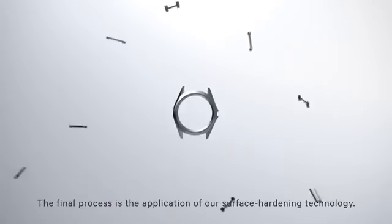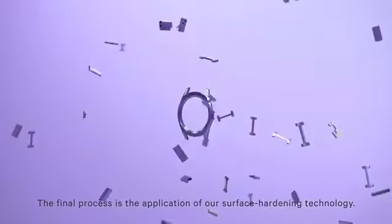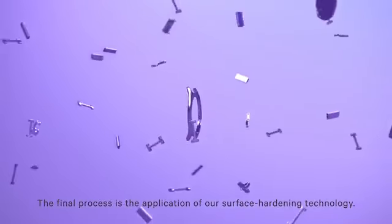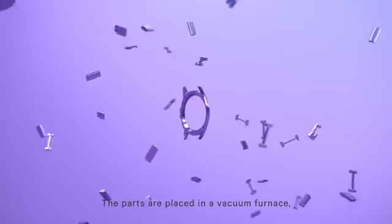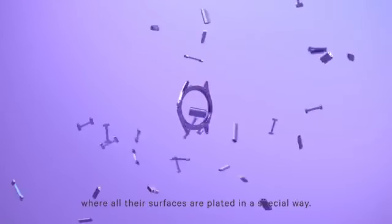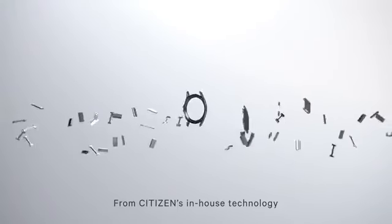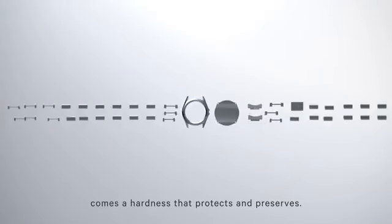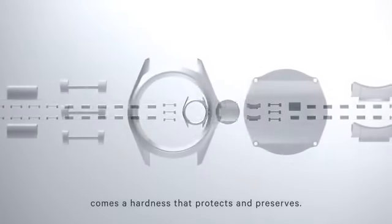The final process is the application of our surface hardening technology. The parts are placed in a vacuum furnace where all their surfaces are plated in a special way. From Citizen's in-house technology comes a hardness that protects and preserves.